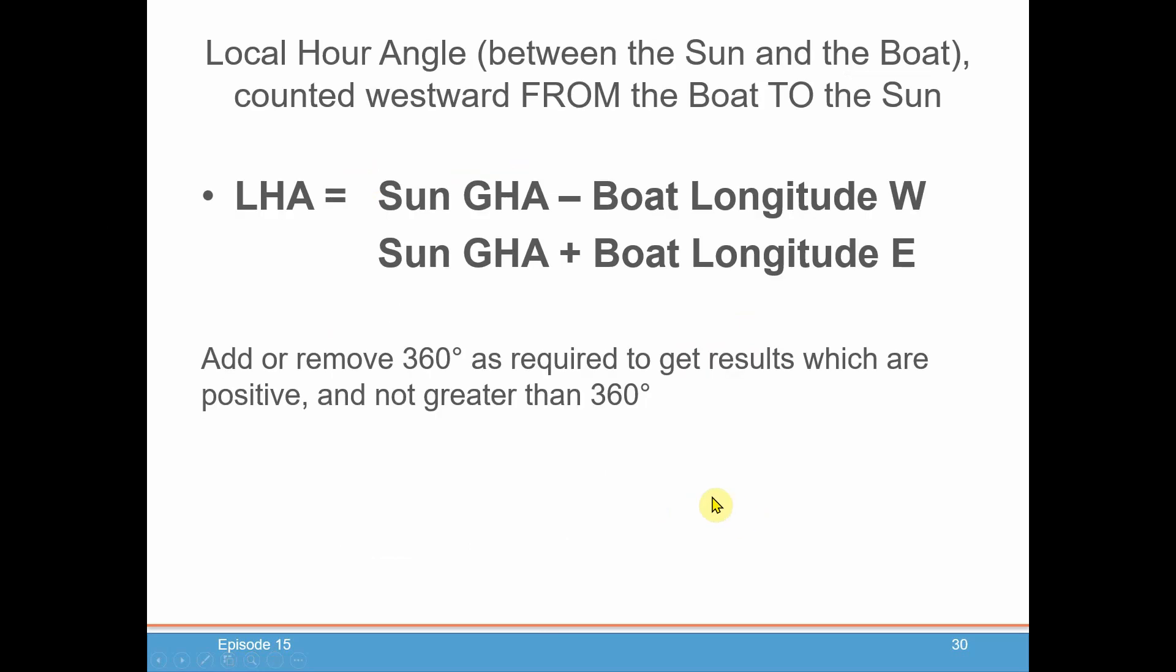So again, just to summarize, local hour angle is the angle between the sun and the boat, going westward from the boat to the sun or whatever celestial body you're trying to calculate for. But for now we're going to stick with the sun, counted westward from the boat to the sun. And it's summarized here, the formula.